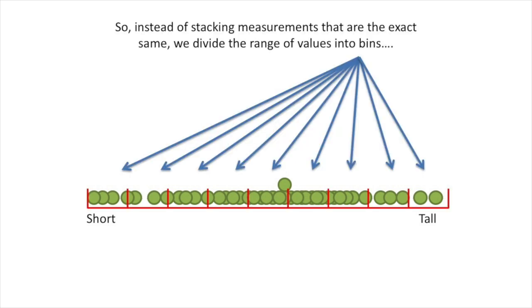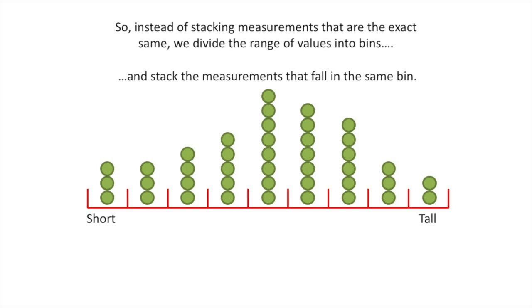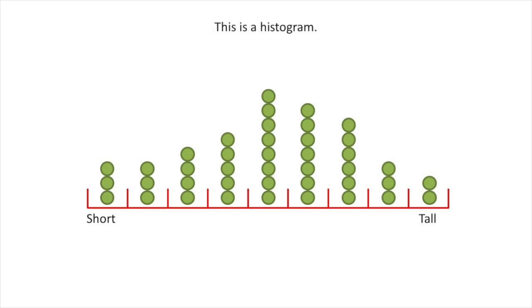So, instead of stacking measurements that are the exact same, we divide the range of values into bins and stack the measurements that fall in the same bin. This, my friends, is a histogram. Bam.